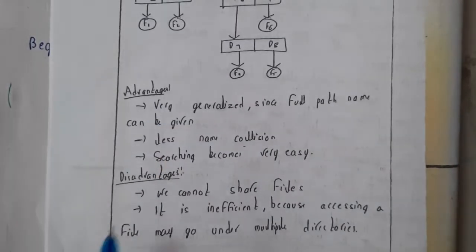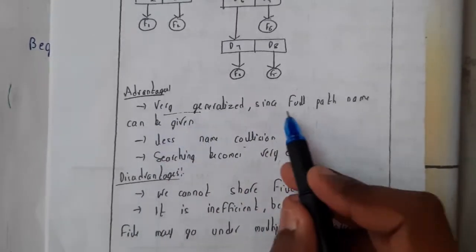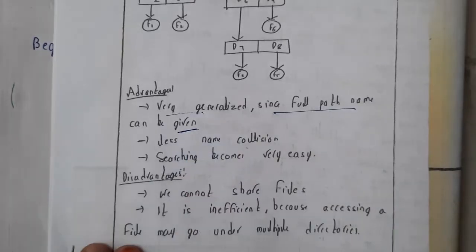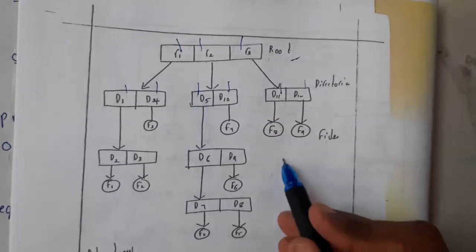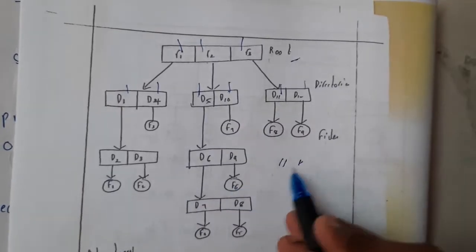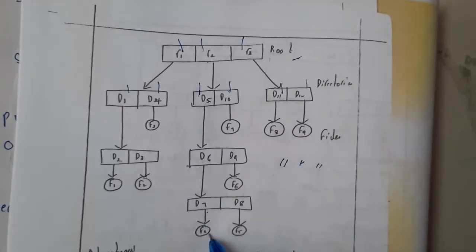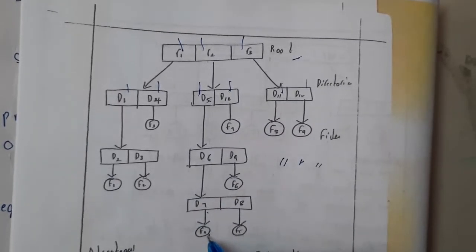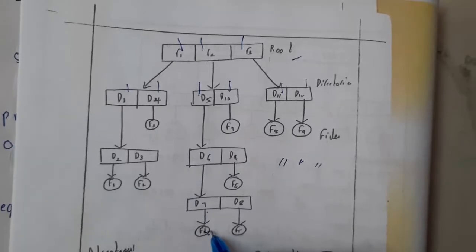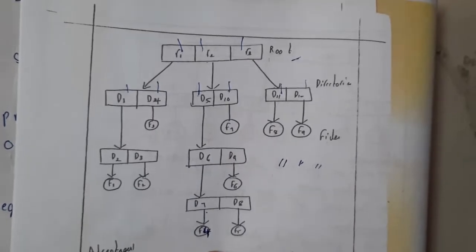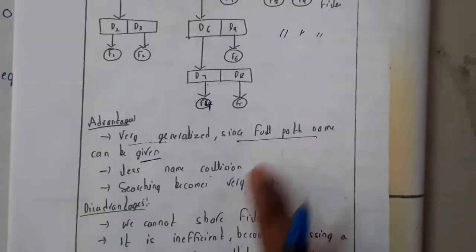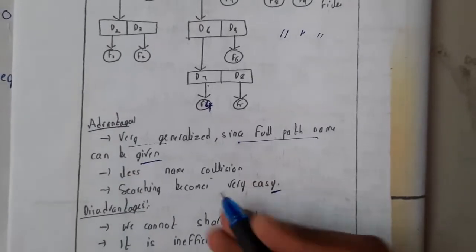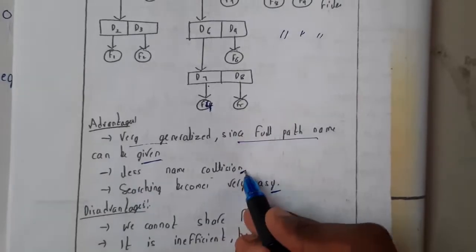What are the advantages? This is very generalized since the full path of the name can be given. We can say that root one double slash D5 double slash D6 double slash D7. Let us assume this as F7 or F6, F5, F4. We need F4. In that way, we can show this will be the path. You'll be going exactly in that path and finding the file. It will be really easy. Searching also becomes really easy, and we can have less name collisions.